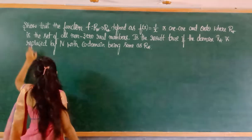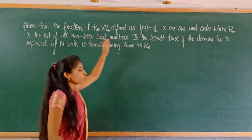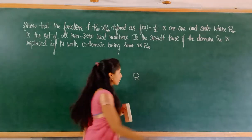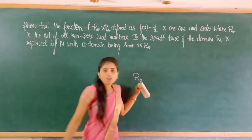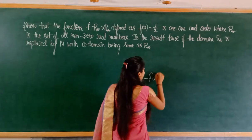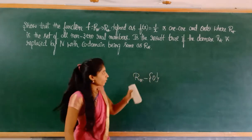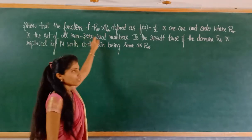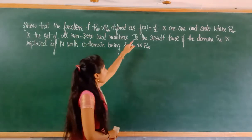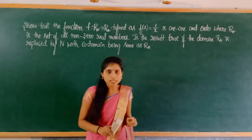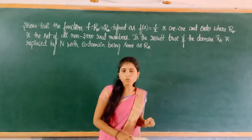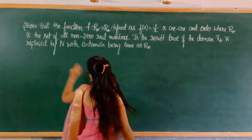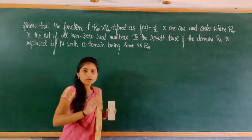Here R* is the set of all non-zero real numbers — that is, all real numbers excluding zero. If the result is true, meaning both one-to-one and onto conditions are satisfied, then later if the domain R* is replaced by natural numbers, we will check what happens.